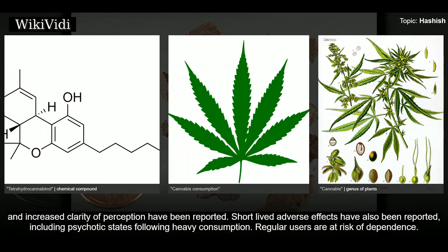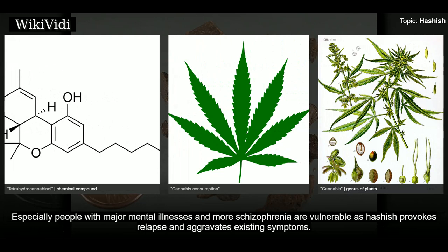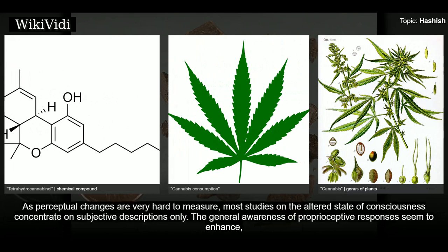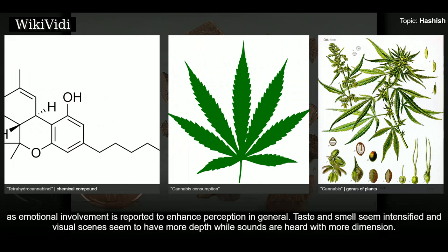Psychotic states following heavy consumption have been reported. Regular users are at risk of dependence, especially people with major mental illnesses; those with schizophrenia are particularly vulnerable as hashish provokes relapse and aggravates existing symptoms. Perceptual changes are very hard to measure, so most studies concentrate on subjective descriptions. General awareness of proprioceptive responses seems to enhance, emotional involvement is reported to enhance perception, taste and smell seem intensified, visual scenes seem to have more depth, and sounds are heard with more dimension.